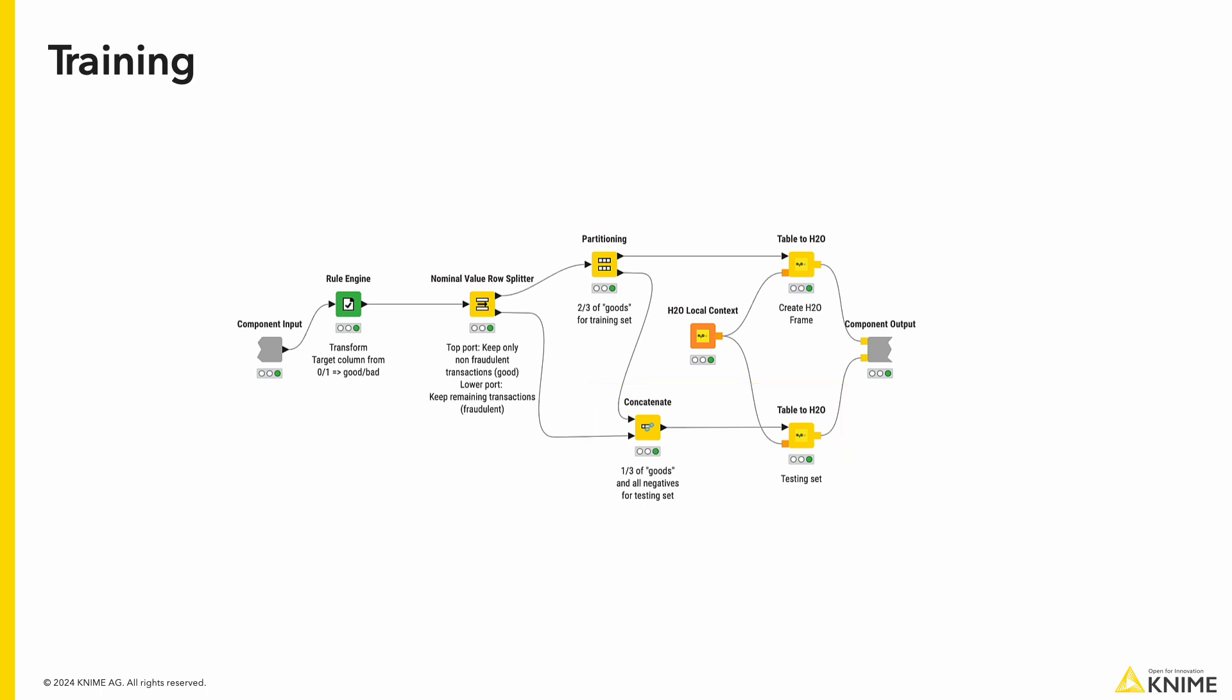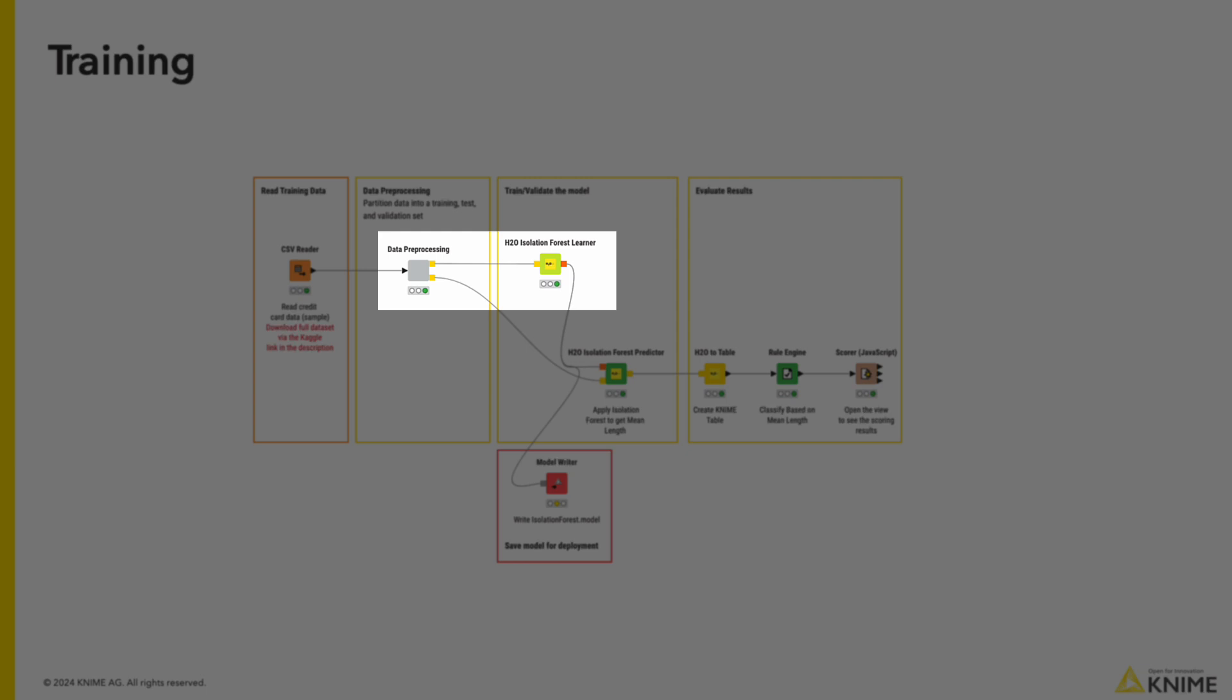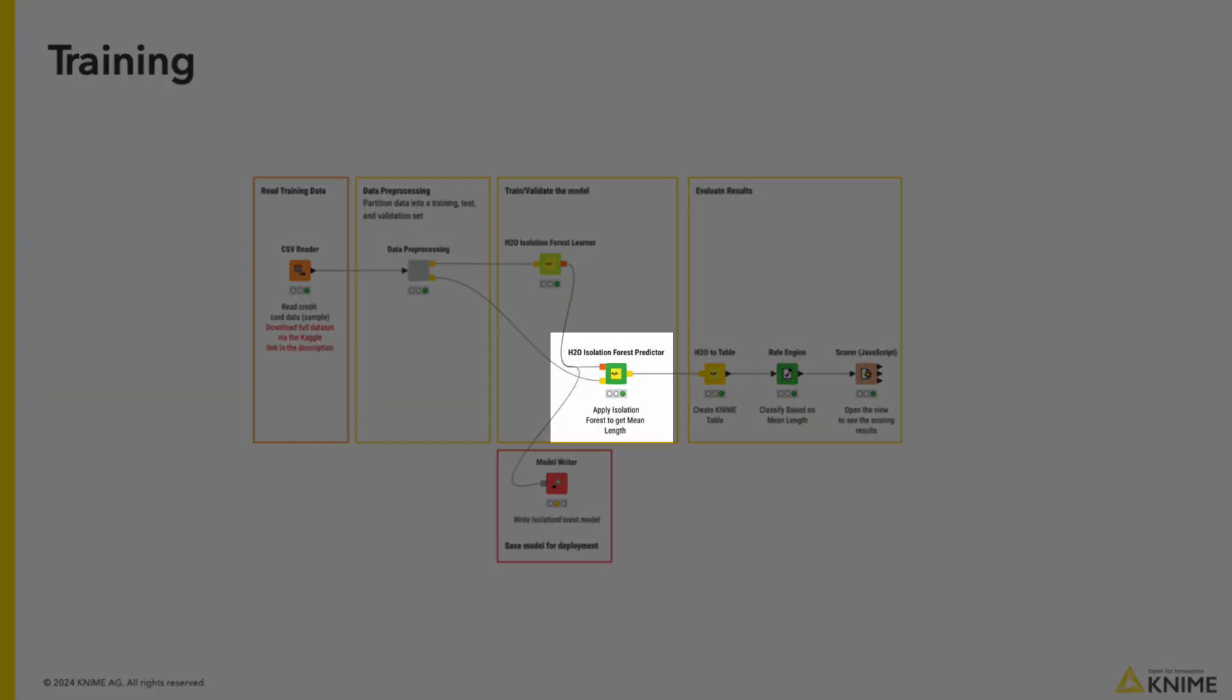After splitting, we can then send two thirds of our normal transactions to the top output port of the component and the rest of our samples are combined and get sent to the bottom port for our testing set. Now, we train the isolation forest on the top port of our normal transactions and we can apply it using the predictor node to the testing set.